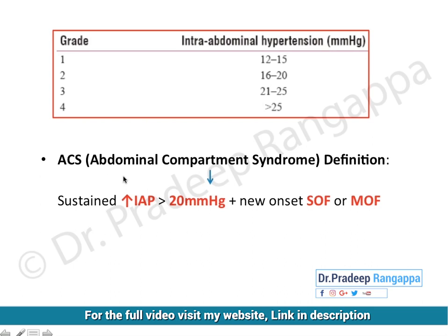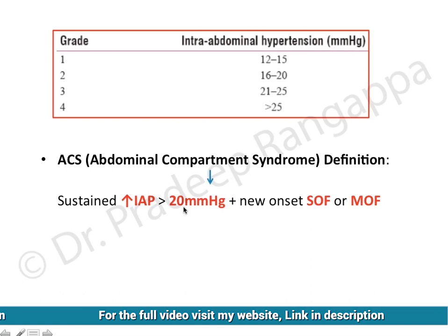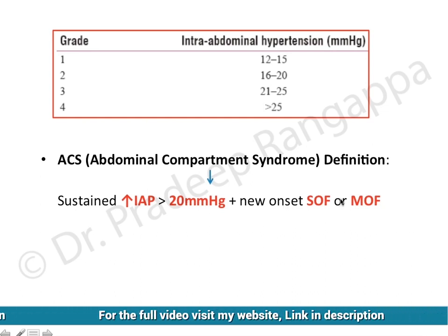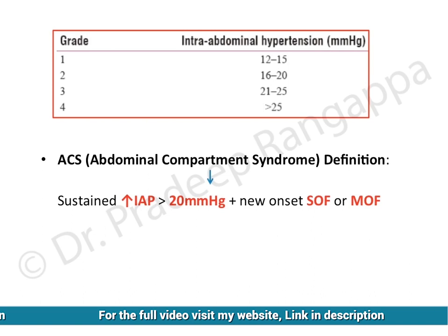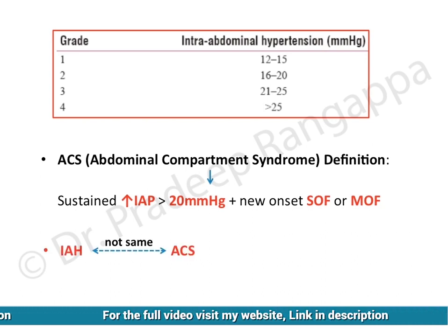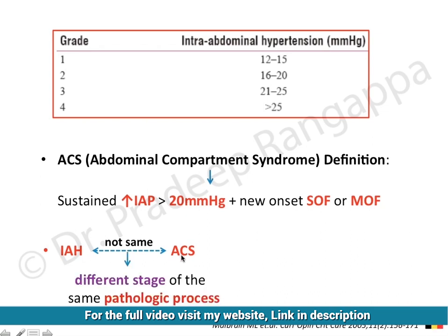To diagnose abdominal compartment syndrome, a patient must have a sustained increase in intra-abdominal pressure more than 20 millimeters of mercury, along with new onset single organ failure or multi-organ failure. This includes developing hypotension, elevated peak airway pressure with respiratory deterioration, or neurological deterioration. Any of these organ failures would qualify. Intra-abdominal hypertension is not the same as abdominal compartment syndrome.